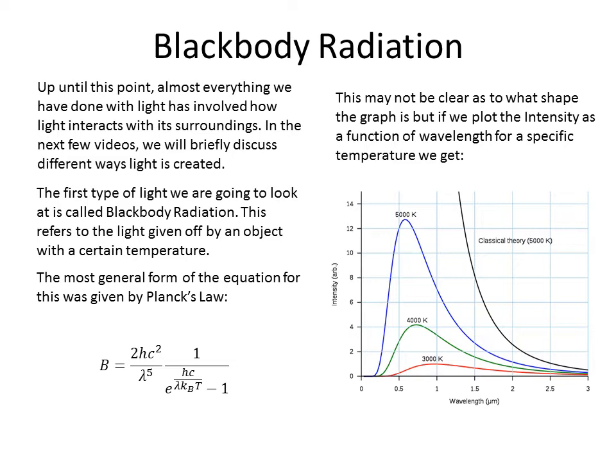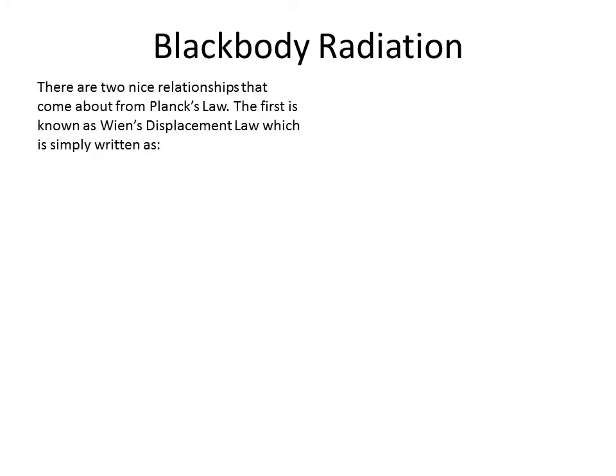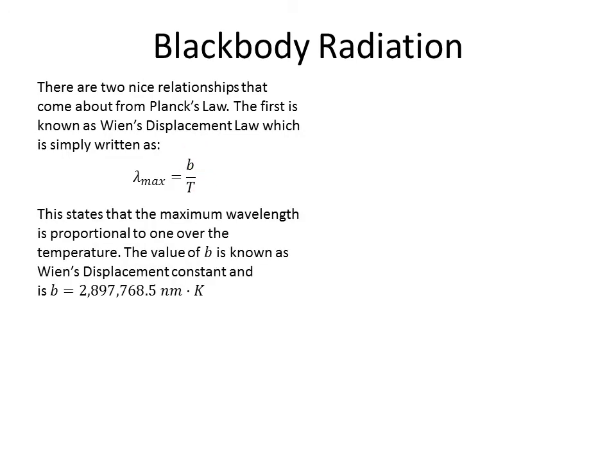And these are two things that are actually going to be related in two related equations. And the first of those two is called Wien's Displacement Law, which is simply written that the maximum wavelength is equal to b over T, where b is the Wien's Displacement constant, and T is the temperature. So our maximum wavelength is proportional to one over our temperature.